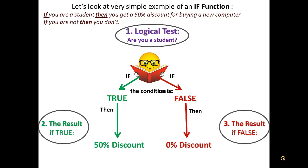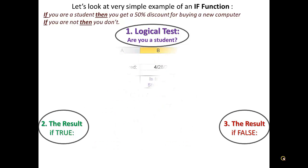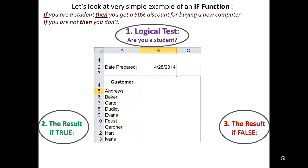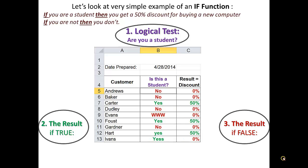Let's view the same example in an Excel worksheet. In the first column, we have the customer names. The second column answers the question if they are students or not. And the third column displays the result that the IF function produces for the customer discount. Now, let's look at how the IF function is built.